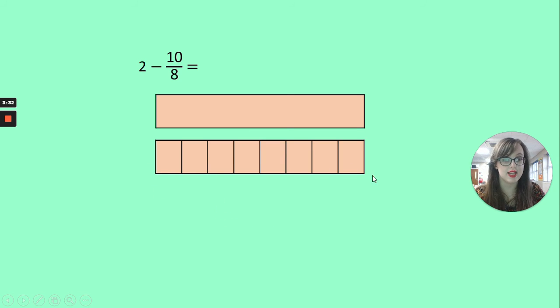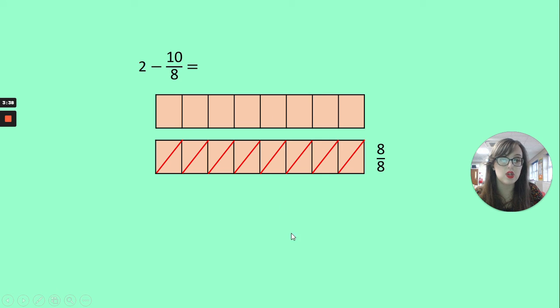I've taken away all 8 at the moment, but I need to take away 10. So I need to take away 2 more from this first hole. So I've got my 2 holes split into eighths, and I've taken away 10 eighths.